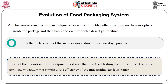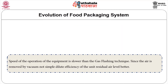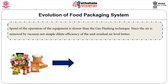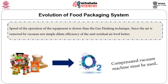The replacement of air in compensated vacuum is accomplished in a two-stage process, so the speed of operation is slower than gas flushing. However, since the air is removed by vacuum and not simply diluted, the efficiency with respect to residual air level is better. Therefore, if the food product is extremely sensitive to oxygen, a compensated vacuum machine must be used.